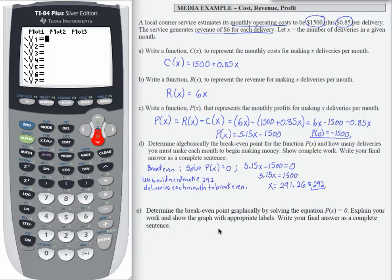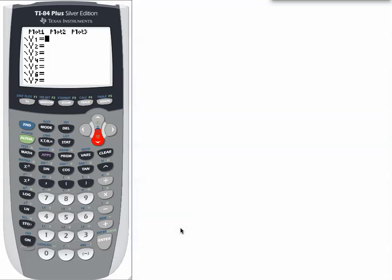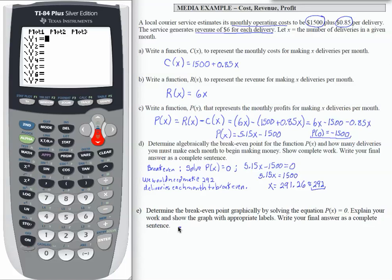So if we're asked to solve the equation P(x) = 0, what we are doing is working graphically with the same equation that we solved algebraically in Part D. So what I'm going to do is write out the equation that I'm going to solve, and then in the calculator, I'm going to let the left-hand side of that equation be y1 and the right-hand side be y2.